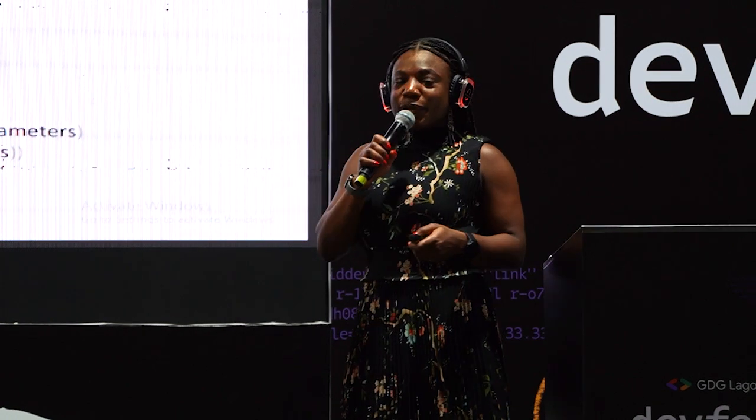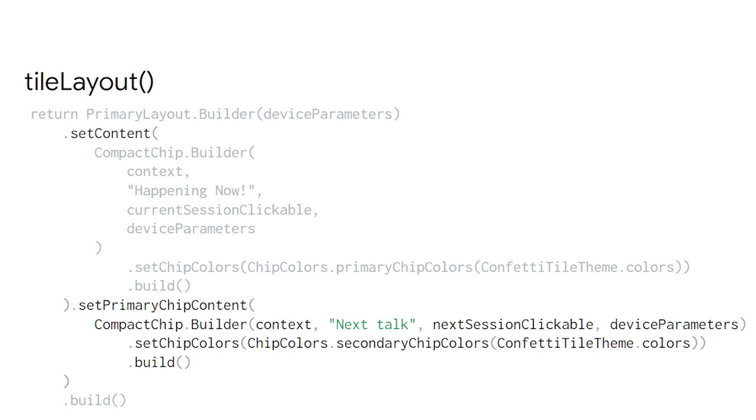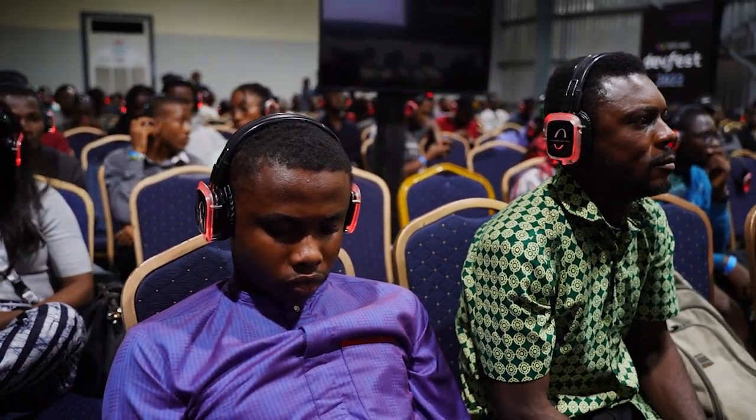For the 'Next' button at the bottom, I used the default chip content — the primary chip content — because it was the most similar component to the mockup. I wanted 'Happening Now' to have focus so I made it purple, but I wanted 'Next' to still display without as much attention, so I made it grayscale with secondary colors. You pass in the context, title, clickable, and device parameters, then build the builder.